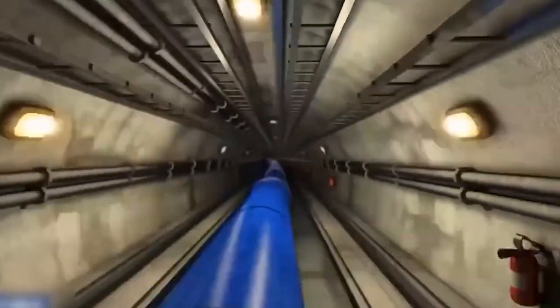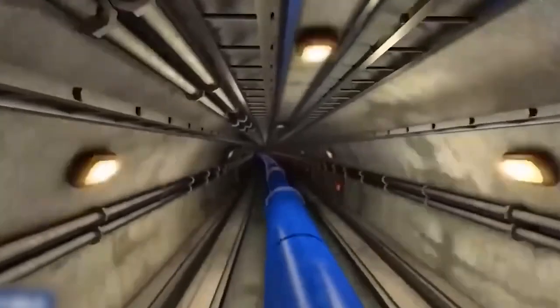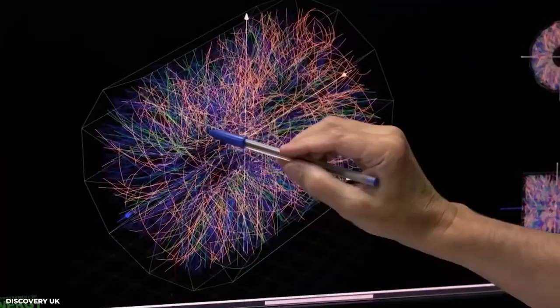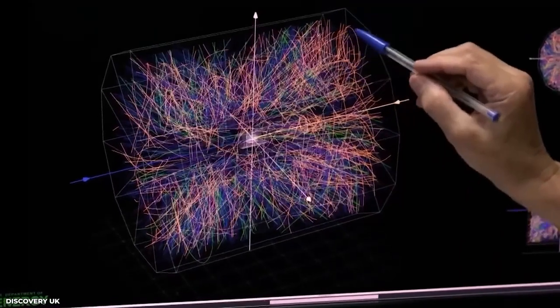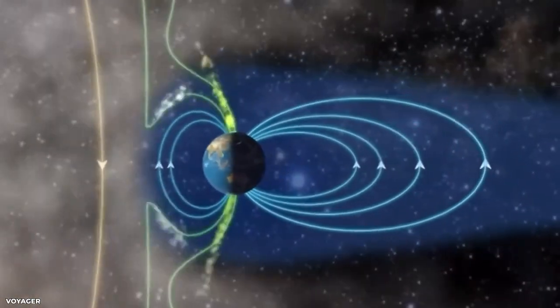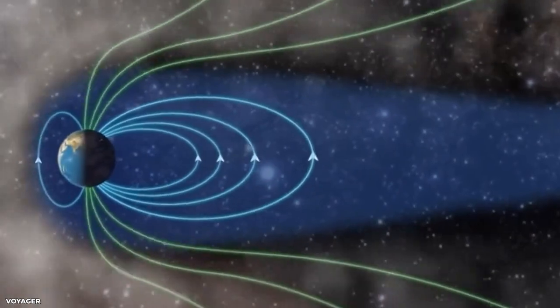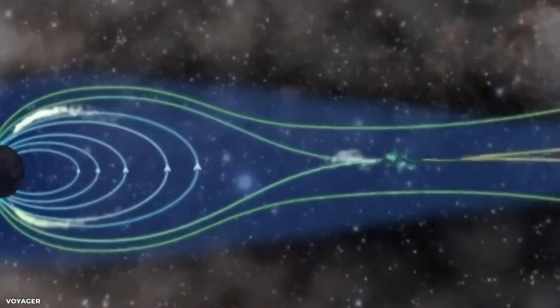But there exists a flaw, a problem known as the tunneling problem. As we know, the wave function of a physical system always specifies about the system. Thereby, the problems in the quantum mechanics are also a depiction of the wave function of the system.